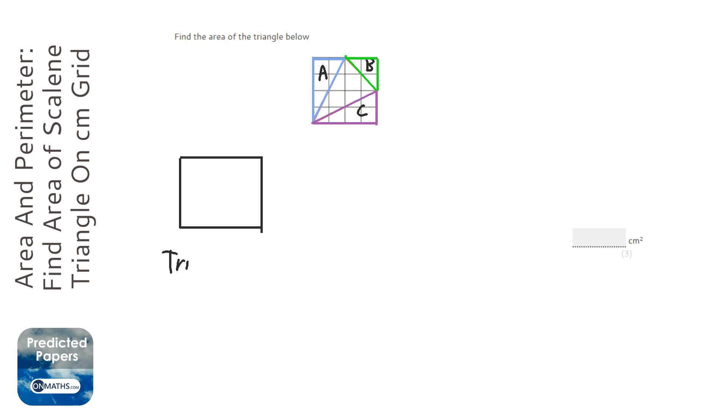So I'm going to work out the areas of each of the triangles. So triangle A, and the area is where it's two squares across and four squares up, so it's half of that, so it's half times the base, which is two, times the height, which is four. So that's going to be four.